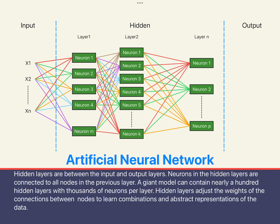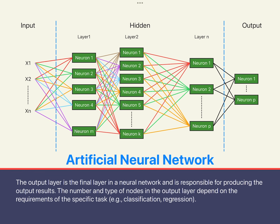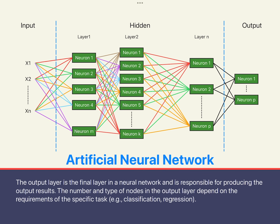A complex neural network may have dozens of hidden layers, with each layer having hundreds or thousands of neurons. Each neuron has its own different weight and bias for the incoming data. They work together to form a robust neural network. The output layer is responsible for outputting the calculation results of the neural network according to our needs.